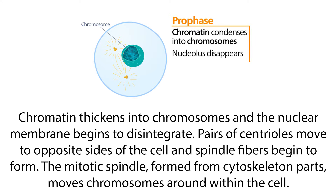During prophase, the chromatin thickens into chromosomes and the nuclear membrane begins to disintegrate. Pairs of centrioles move to opposite sides of the cell and spindle fibers begin to form. The mitotic spindle, formed from cytoskeleton parts, moves chromosomes around within the cell.